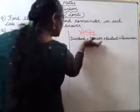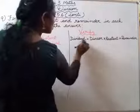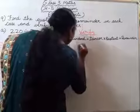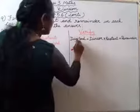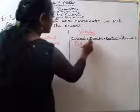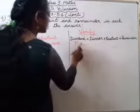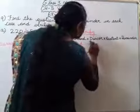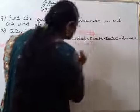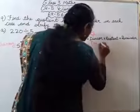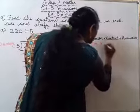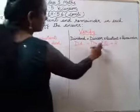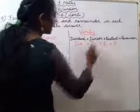Iska pura likhne ka agar likhna hai to likh sakte hai, nahi to iska short form bhi likh sakte hai. Dividend ka DD likhungi. Kyunki yeh dividend aur divisor — dono mein first letter D hai, isliye to iska first letter aur last letter lele ho. Dividend ka DD. DD is equal to divisor ka DR, multiplied by quotient — Q ek hi hai, to sirf Q likh sakte hai — plus R.